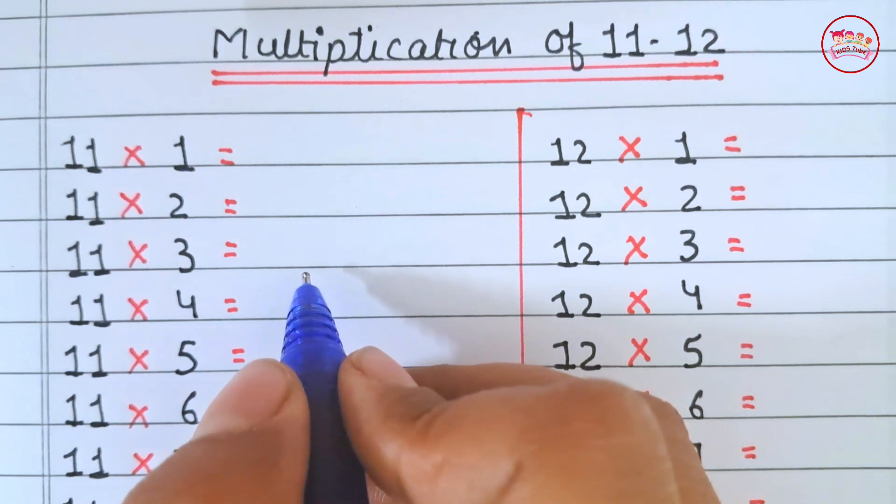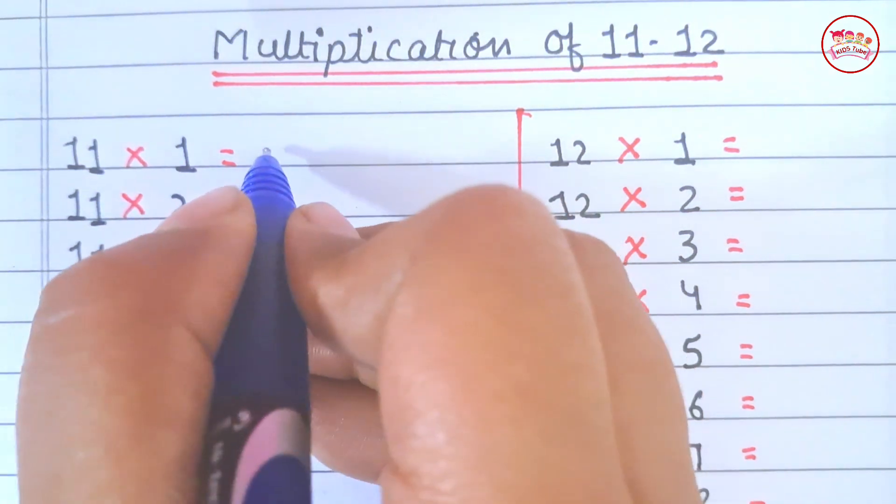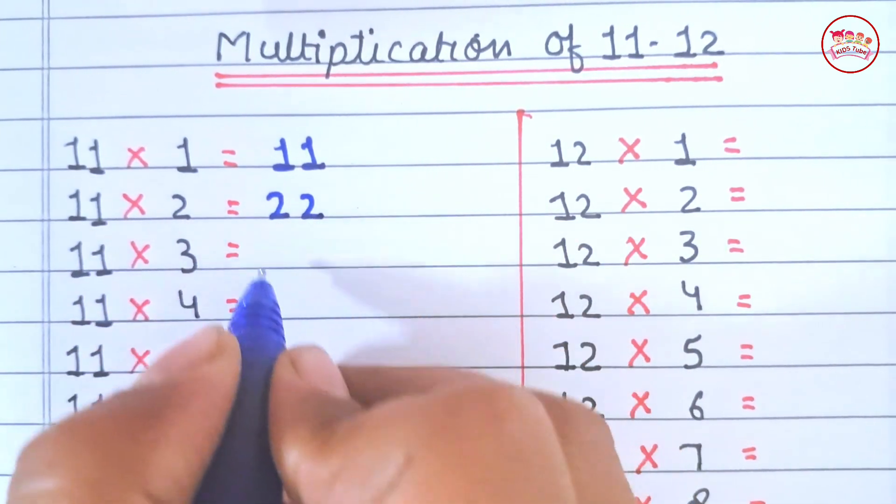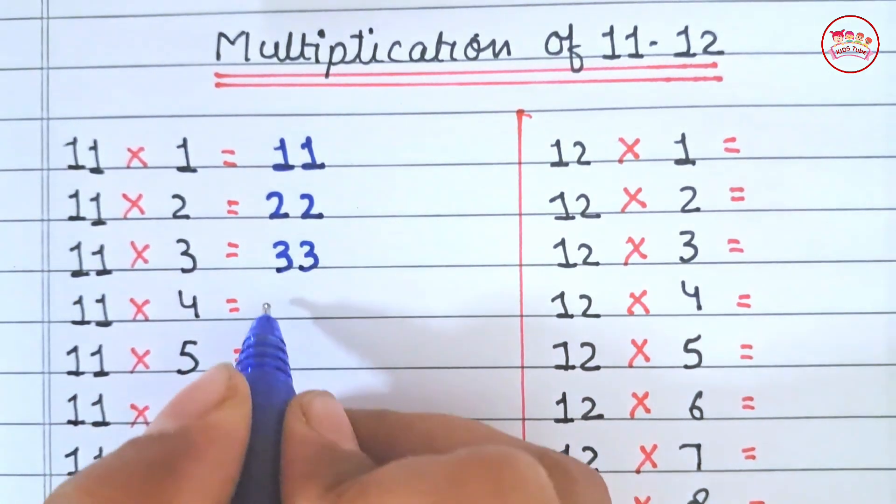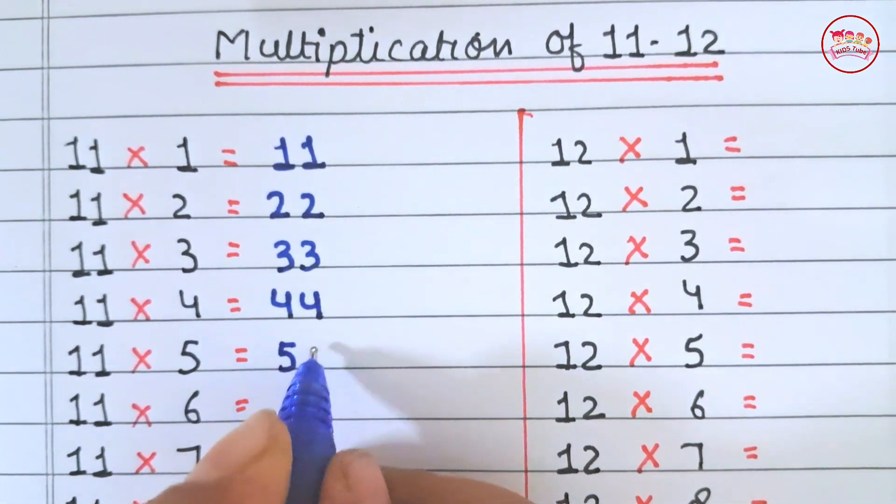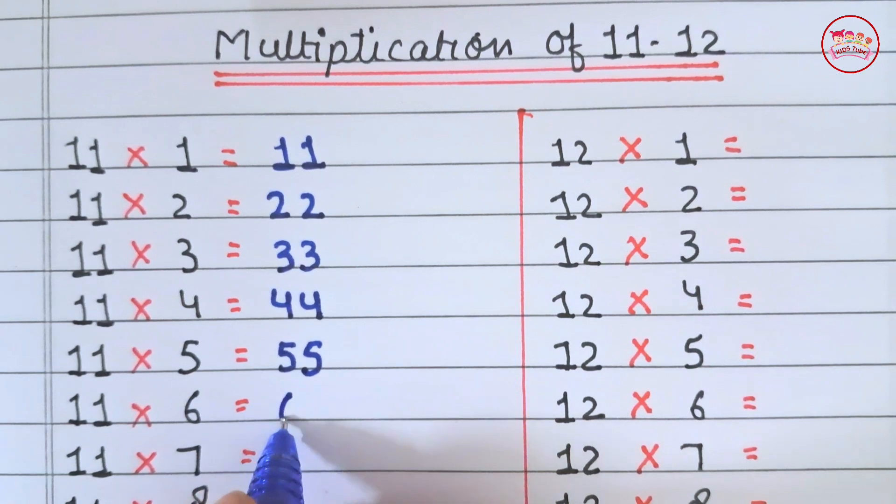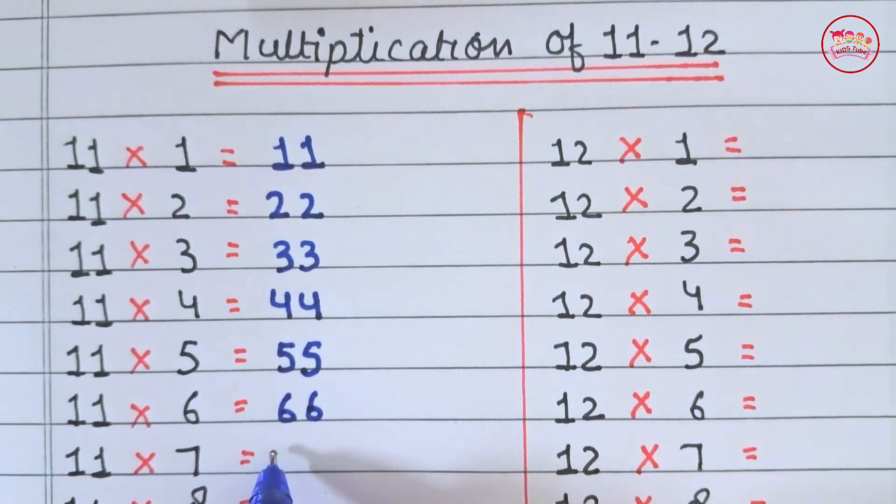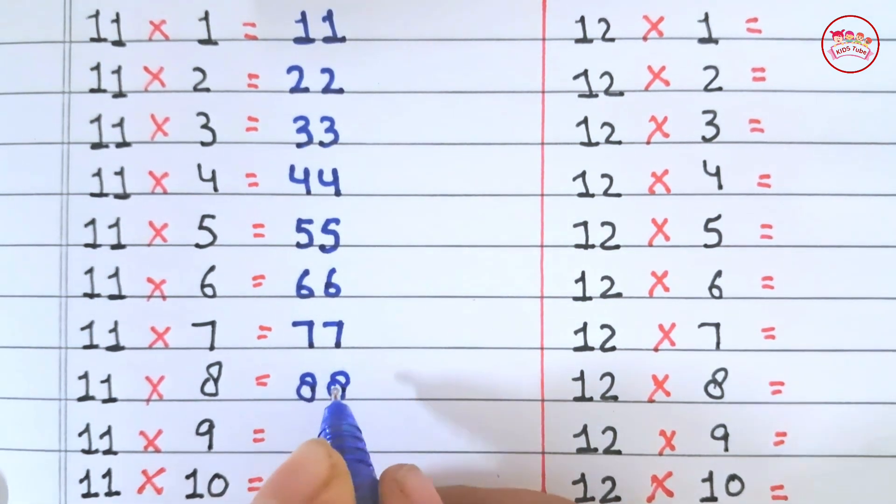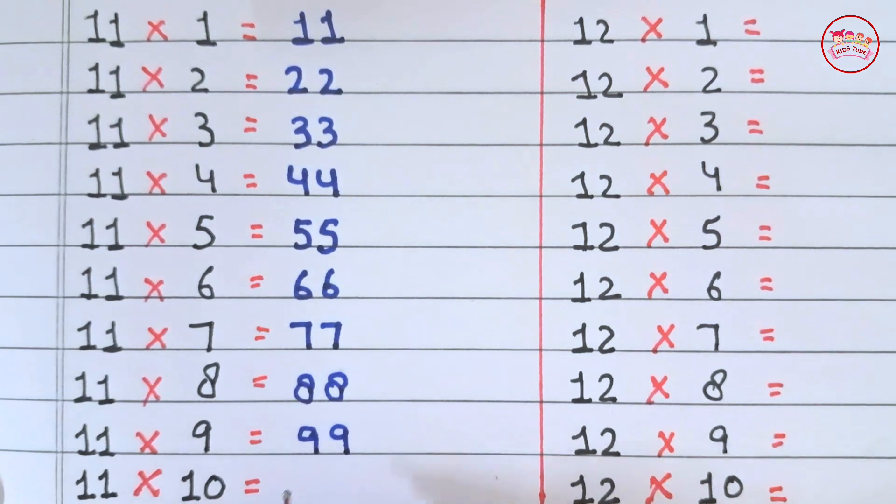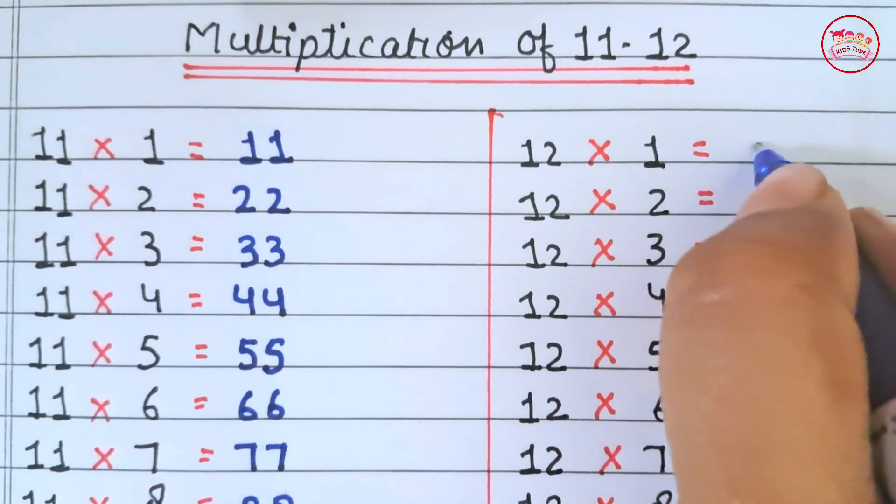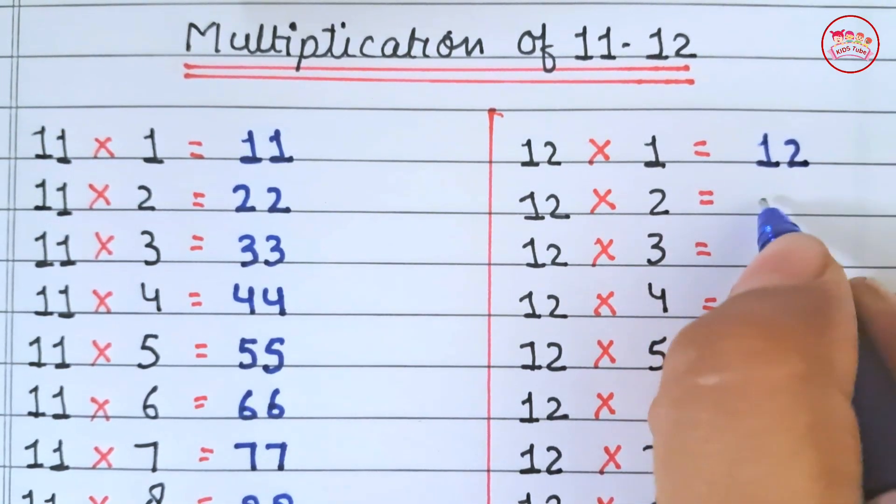Multiplication of 11 and 12. 11×1 is 11, 11×2 is 22, 11×3 is 33, 11×4 is 44, 11×5 is 55, 11×6 is 66, 11×7 is 77, 11×8 is 88, 11×9 is 99, 11×10 is 110. 12×1 is 12, 12×2 is